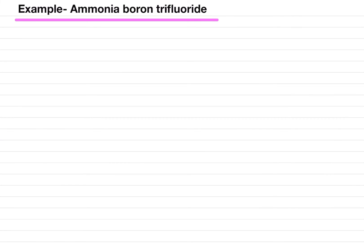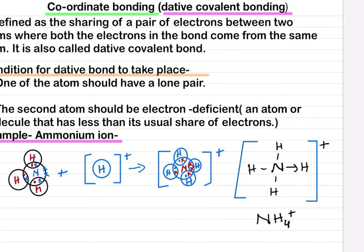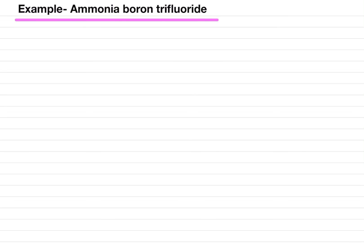Now let's understand coordinate bonding with another example: ammonia and boron trifluoride. Remember the two conditions — one atom should have a lone pair, and the second atom should be electron deficient. Coordinate bonding is the sharing of a pair of electrons where both electrons come from the same atom.